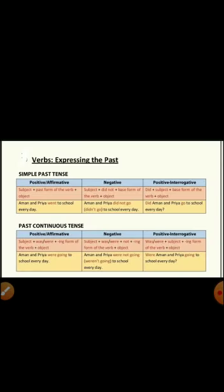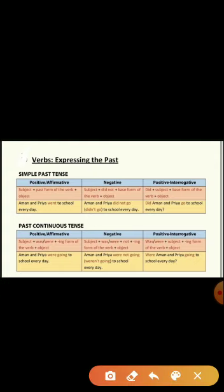The topic name is verbs expressing the past. We have already studied verbs expressing the present. What do you mean by past? Past tense expresses the action or state of being in the past — means the action which is already done. Past tense also has four subdivisions as the present tense: simple past tense, past continuous tense, past perfect tense, and past perfect continuous tense.